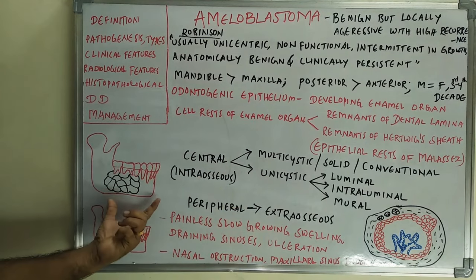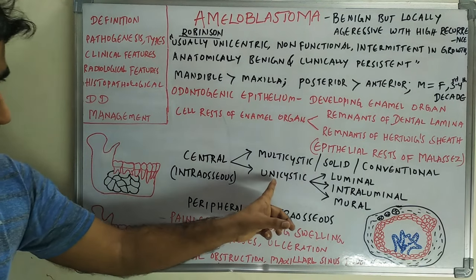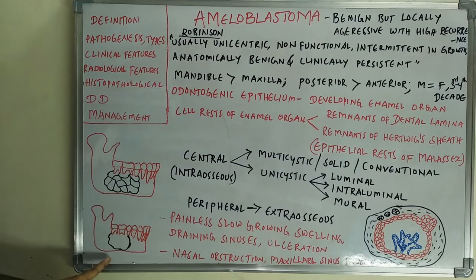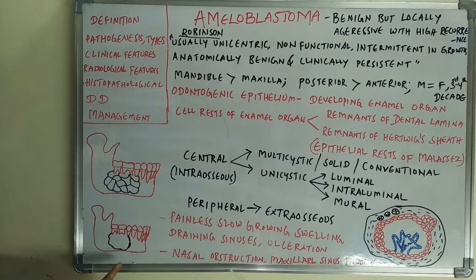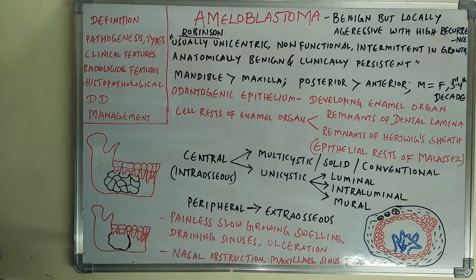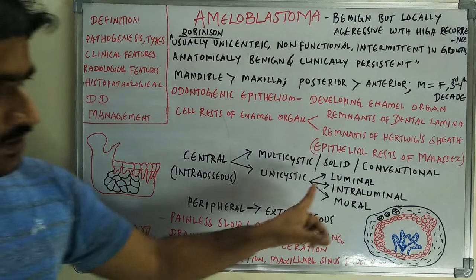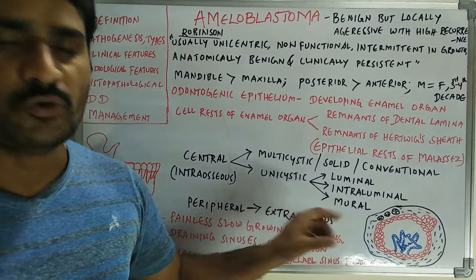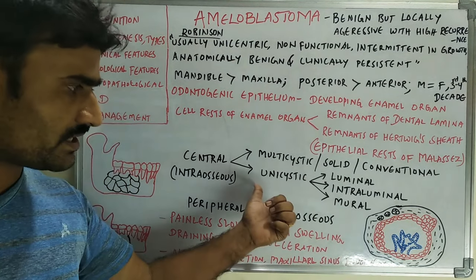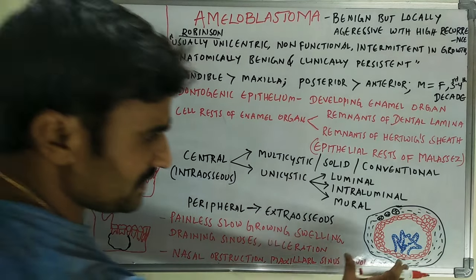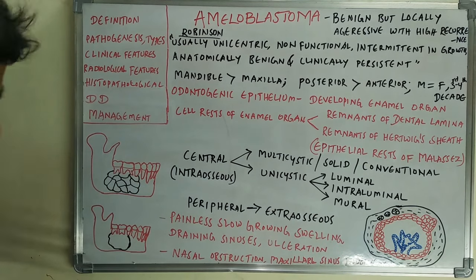The unicystic variant means there are no lacunae and the tumor appears as a single cyst. In unicystic amyloblastoma there are three varieties: luminal, intraluminal, and mural.